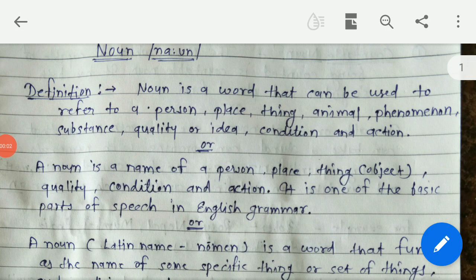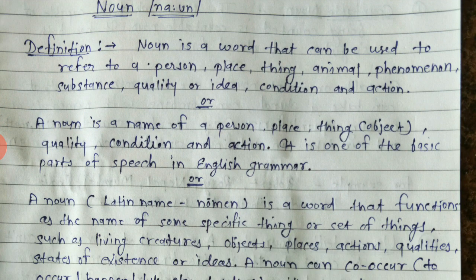Good morning everyone. The other day we talked about parts of speech, and I told you that there are eight parts of speech in English grammar. We discussed that in modern English grammar we also discussed two parts of speech: articles and determiners. Now let's move towards the first part of speech, that is noun.